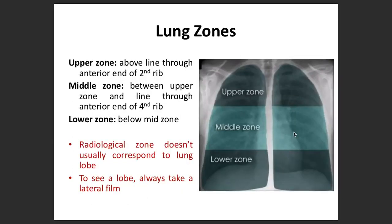Coming to lung zones: there are three zones — upper, middle, and lower — corresponding to the areas above the second rib, between the second and fourth ribs, and below the fourth rib. One thing to always remember is that the zones on each side correspond to those levels.